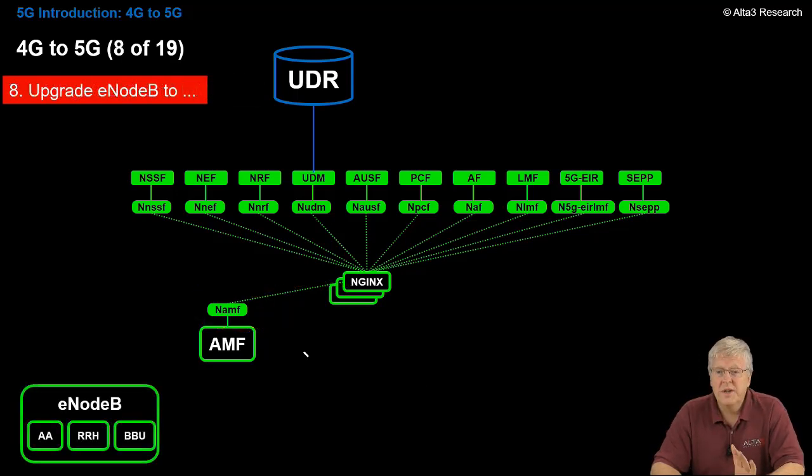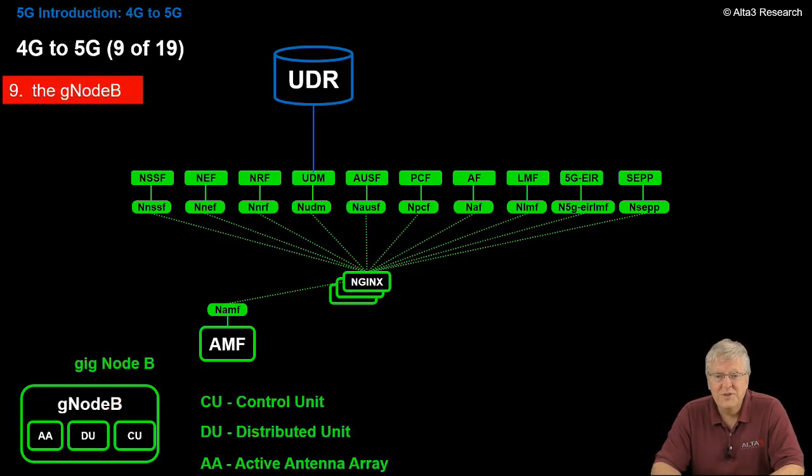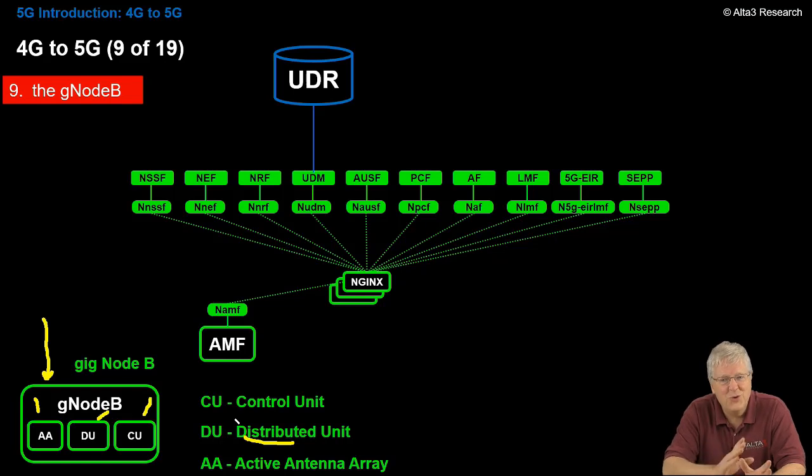For illustrative purposes only, let's add an eNodeB. We have the antenna array, remote radio head, and the BBU, the baseband unit. But we don't want to use the 4G antenna array anymore. So we're going to swap out that eNodeB with a gNodeB. That's GIGANodeB. We have the active antenna array, the DU, which is the distributed unit, and the control unit, which actually is going to be sort of part of what used to be the baseband unit.